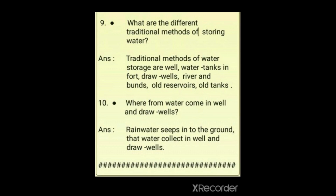Question 10: Where does water come from in wells and draw wells? Rain water seeps deep into the ground, and this underground water collects in wells and draw wells. By digging wells and draw wells, we get this collected seeping rainwater. The answer is: rainwater seeps into the ground and that water collects in wells and draw wells.